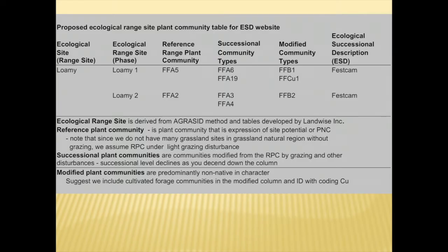When we review plant community tables, each ecological range site will have one reference plant community. If we have enough data, we will also describe successional plant communities that may result from grazing disturbance. We also have a class of plant community we call modified — those are plant communities where the native species have been largely replaced by invasive species like Kentucky bluegrass, smooth brome, and Timothy.